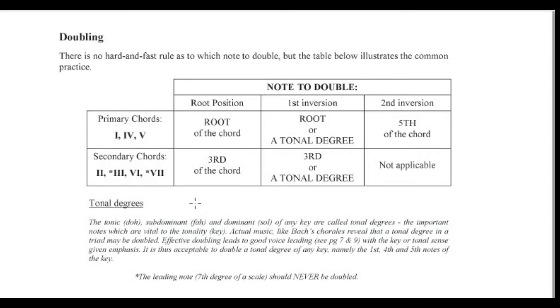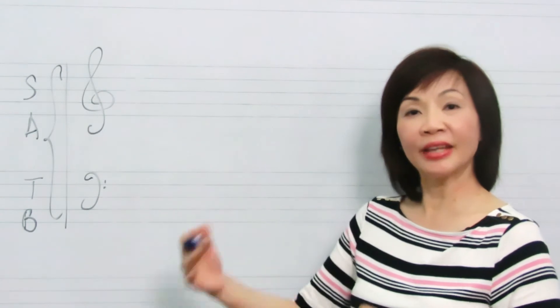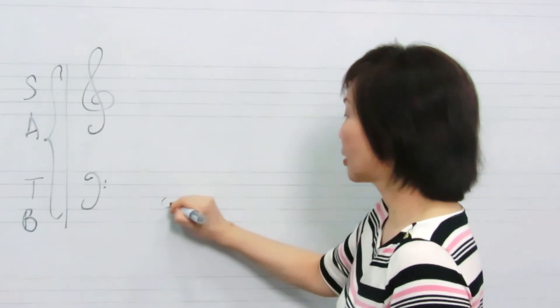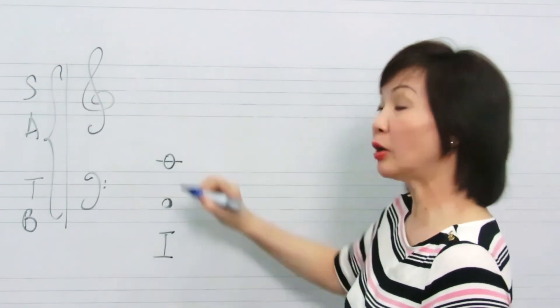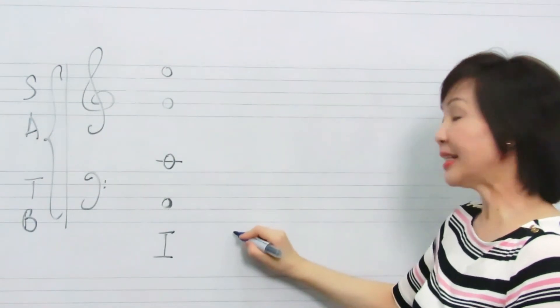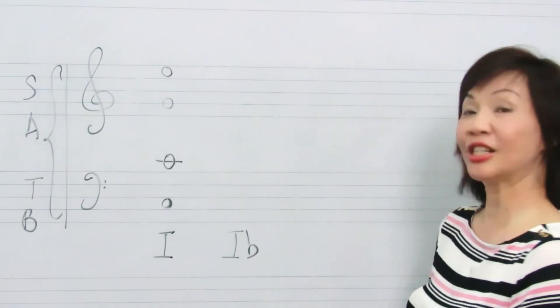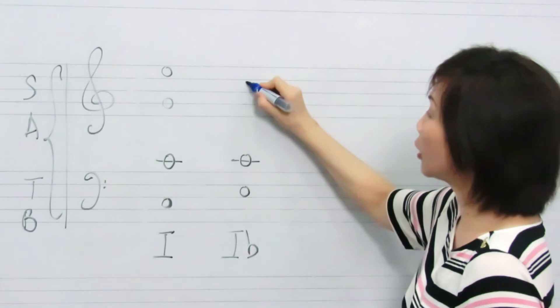Tonal degrees refer to the tonic, subdominant, and dominant notes of any key. In C major, they would be C, F, and G. Let me now show you how to write the primary chords in their various positions. When we write the tonic triad in root position, we double the root of the chord. When we write the primary chord in first inversion, we double also the root of the chord.